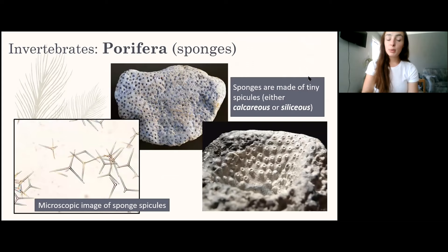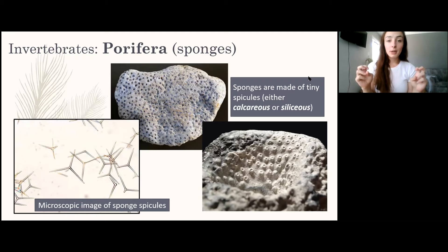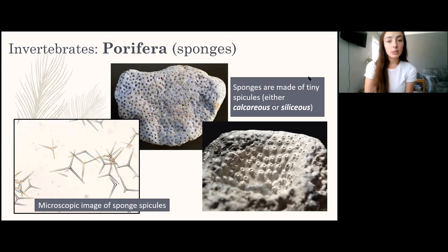Animalia includes both invertebrates and vertebrates. The first invertebrate phylum is Porifera, which includes mostly sponges. Sponges have a good rock record because most are either calcareous — made of calcium carbonate — or siliceous — made of silica — both of which are hard parts that preserve well. Sponge spicules change in morphology depending on species, so using a microscope we can identify the species or broader classification of sponge.